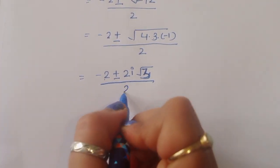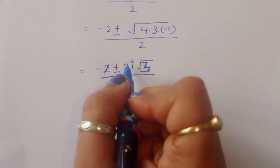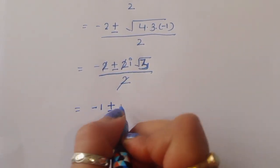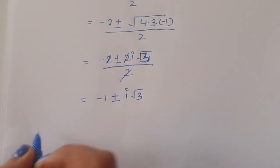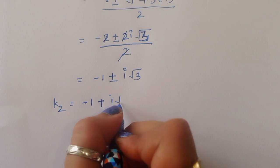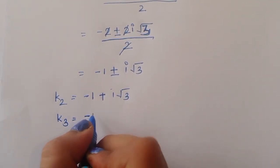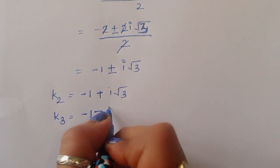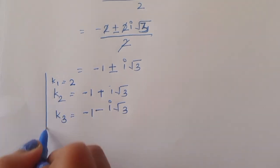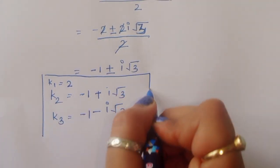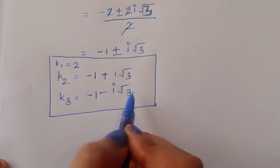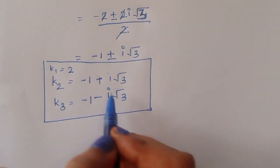The 2 cancels from numerator and denominator. So from Case 2 we get three solutions: k₁ equals 2, k₂ equals minus 1 plus i square root of 3, and k₃ equals minus 1 minus i square root of 3. Now let's verify for k₁ equals minus 2 and k₁ equals 2.